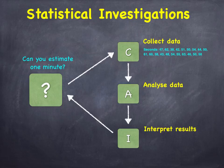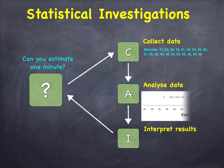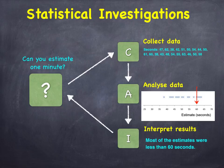For stage two they drew a dot plot and then added an arrow to highlight sixty seconds. At stage three the class had a lot to say about what the dot plot revealed, but what really stood out for them was how many of the estimates were less than sixty seconds.